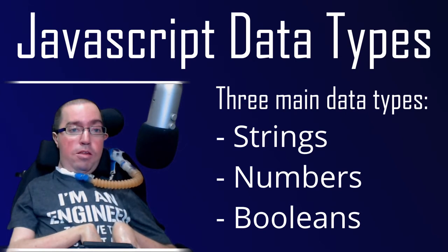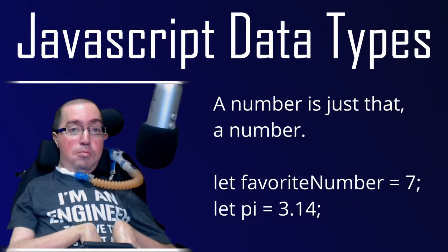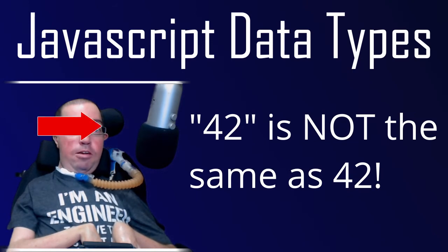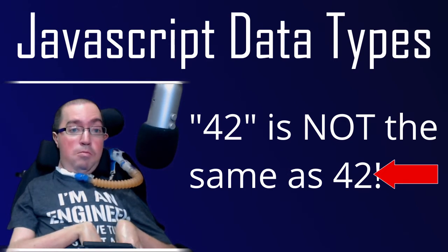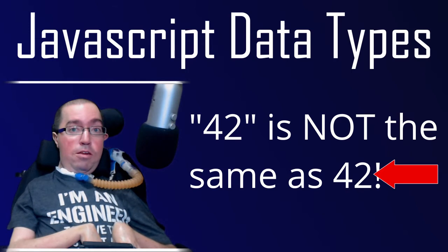Strings, numbers, and booleans. Strings are nothing more than text surrounded by quotation marks, like what you see on the screen. A number is exactly that — a number, but without quotation marks. They can be either integers or decimals, as you can see here. Be aware that 42 like this is not the same as 42 like this, because 42 with quotations is a string and 42 without quotations is a number.